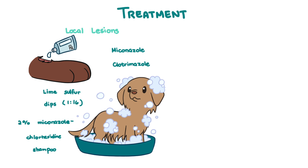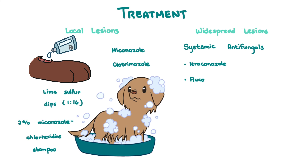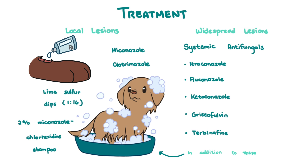More severe and widespread cases may be given systemic antifungals orally. These can be itraconazole, fluconazole, ketoconazole, griseofulvin, or terbinafine. Ketoconazole should not be given to cats, as adverse effects include anorexia and hepatotoxicity. Griseofulvin is better absorbed when taken with a fatty meal.